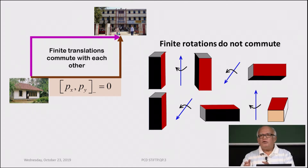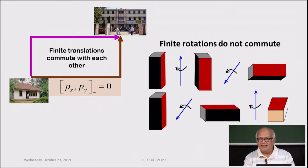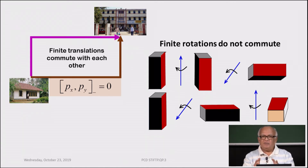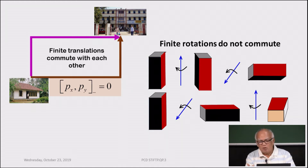When you talk about translational displacements, we know that they commute. It doesn't matter whether you first go east and then north, or first go north and then east to reach your destination. These translational displacements commute as a result of the fact that the generators of these displacements — which are the linear momentum operators — commute. So px and py commute; they generate an abelian algebra.